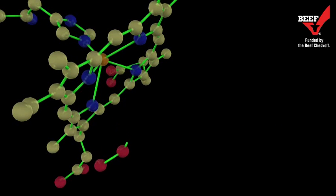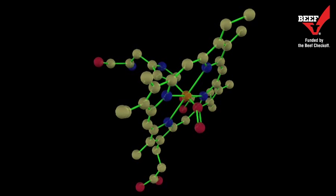Myoglobin commonly exists in four chemical forms: deoxy, oxy, met, and carboxymyoglobin.